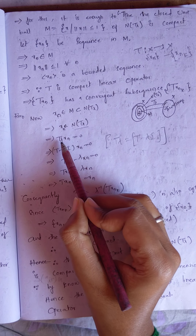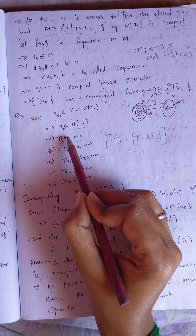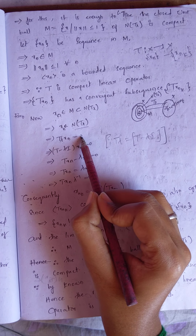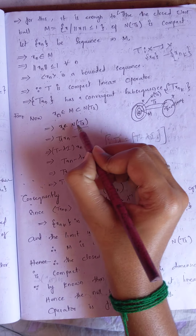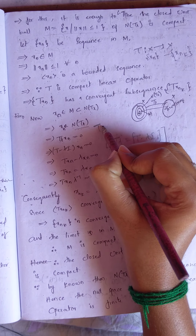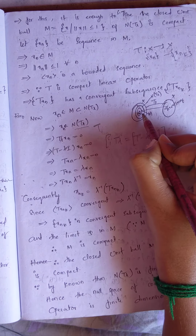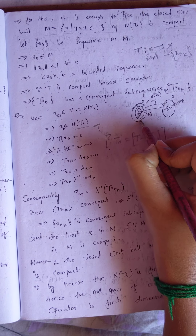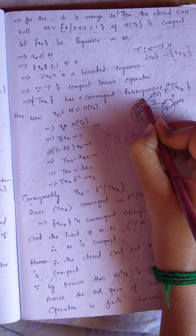That means T_lambda applied to x_n is equal to 0, since x_n belongs to the null space N(T_lambda).